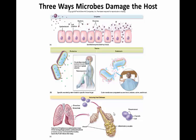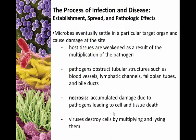This is where we left off with part two, describing three ways that microorganisms damage the host: enzymes and toxins being the two direct ways, and then indirect damage due to an overreactive host response. Now eventually microorganisms will settle in a specific region and cause damage at that site. In some instances host tissues are weakened simply as a result of the multiplication of the pathogen — they will actually leach nutrients from that particular area.